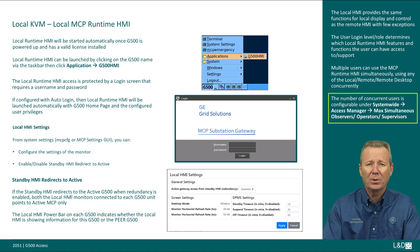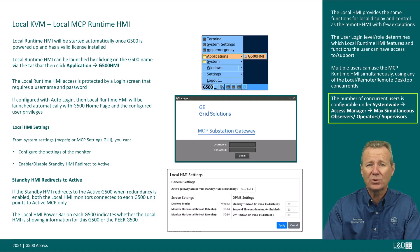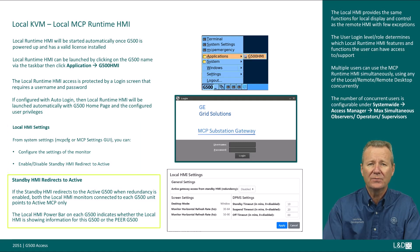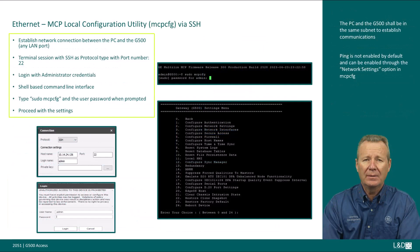Multiple users can use the MCP runtime HMI simultaneously using any of the local, remote, or remote desktop sessions concurrently. The number of concurrent users is configurable under system-wide access manager max simultaneous observer, operators, and supervisors in the DSAS MCP Studio configuration tool. You can configure the settings of the monitor connected to the display port and enable or disable the standby HMI redirect to active through the local HMI menu of the MCP utility or the MCP settings GUI. If the standby HMI redirects to the active G500 when redundancy is enabled, both local HMI monitors on each G500 unit point to the active MCP only.